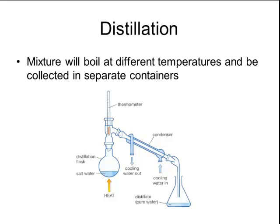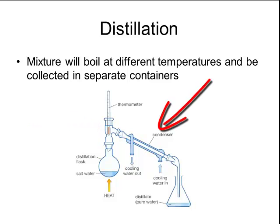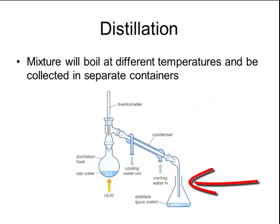An example of distillation would be taking salt water and putting it into a flask, as seen on the left-hand side of the diagram. When you apply heat, the water will begin to boil and rise up as a gas into the top of the flask. That gas then travels through a condenser, where water is being circulated to cool that gas down, and coming out the other end on the right-hand side would be the pure water. The salt that was in the salt water will remain in the flask, and just the pure water is collected as the distillate in the flask on the right.